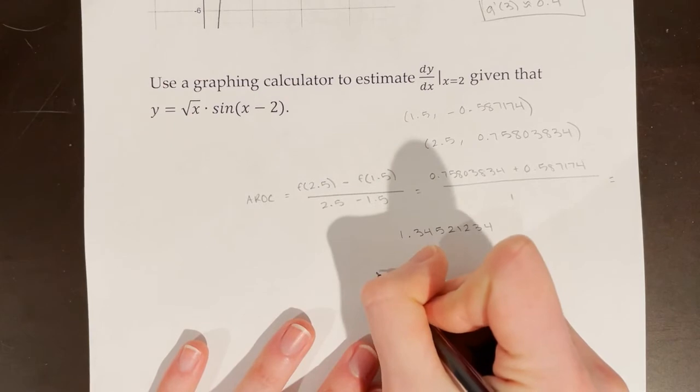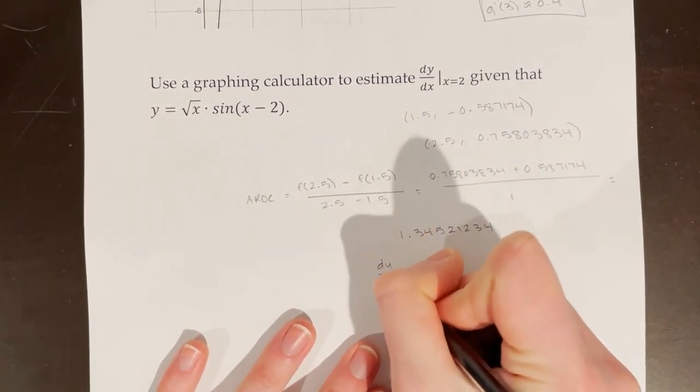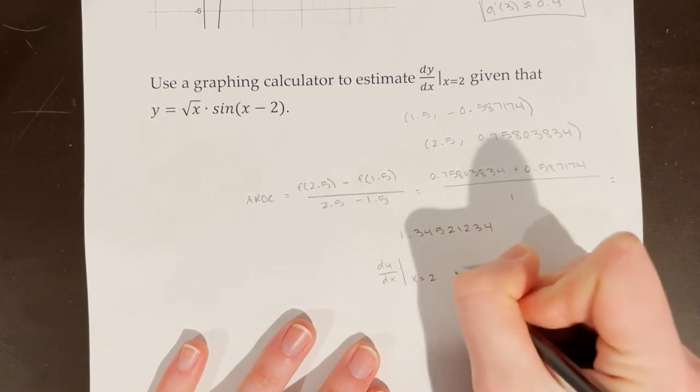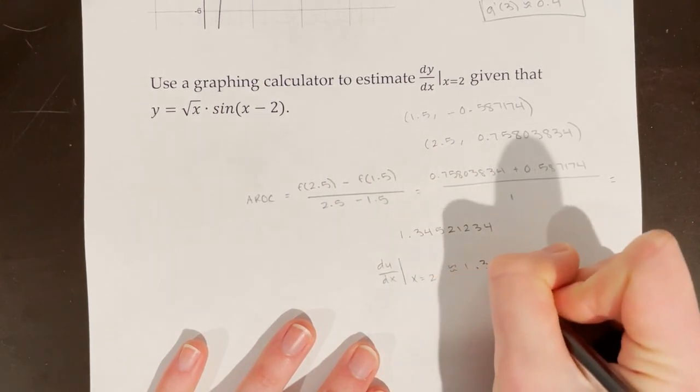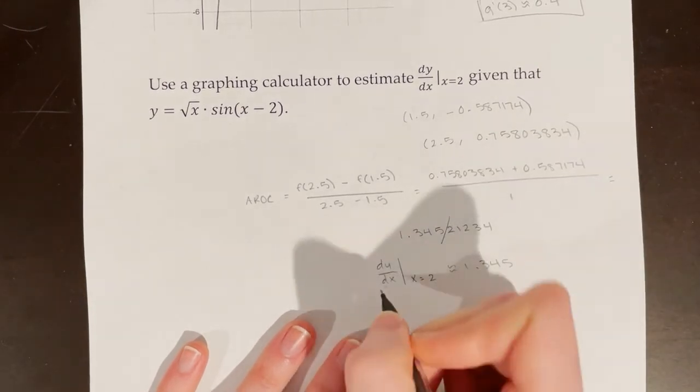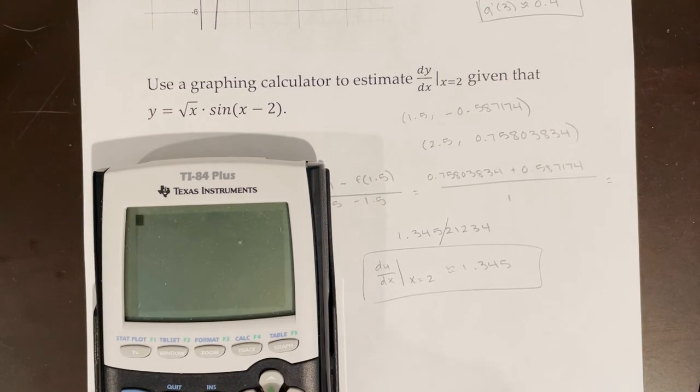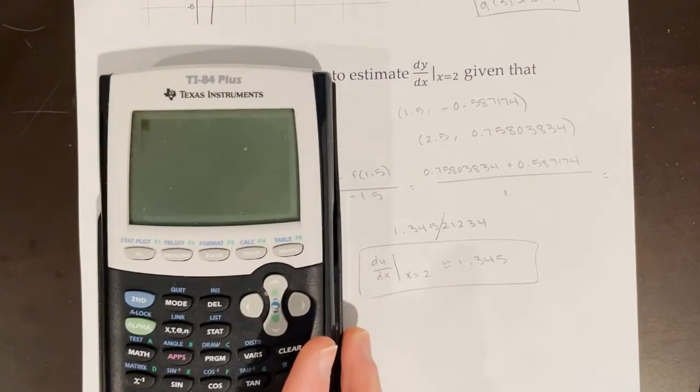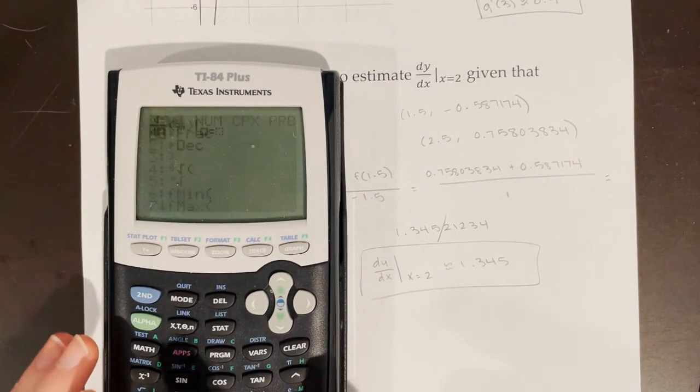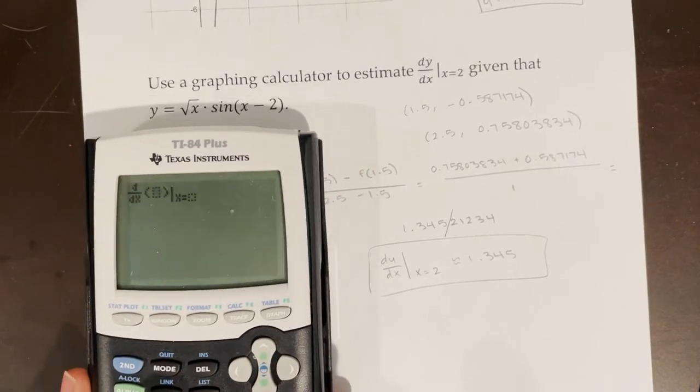And I get that y prime at x equals 2 or dy over dx at x equals 2 is approximately 1.345. And I'm going to round my decimal to three places because that's how you do it on the AP exam. And you might think, well, that's silly because if you have your graphing calculator anyways, what you could just do is use the math 8 button and then plug your function in and find the exact derivative at x equals 2 like this.